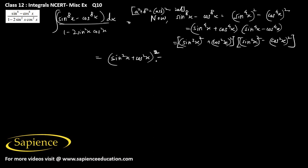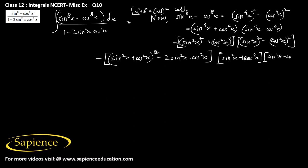So sin⁴x + cos⁴x = 1 - 2sin²x·cos²x, since sin²x + cos²x = 1. And sin⁴x - cos⁴x factors as (sin²x + cos²x)(sin²x - cos²x) = 1·(sin²x - cos²x) = sin²x - cos²x. Therefore the numerator becomes (1 - 2sin²x·cos²x)(sin²x - cos²x).